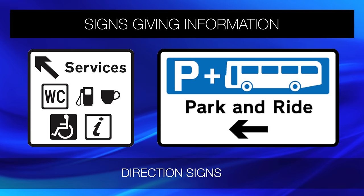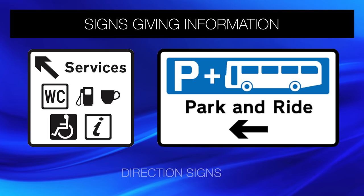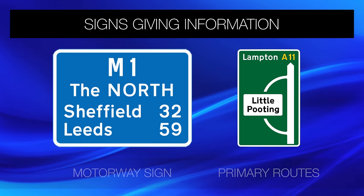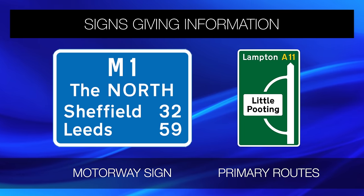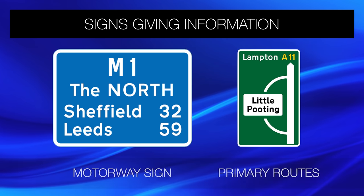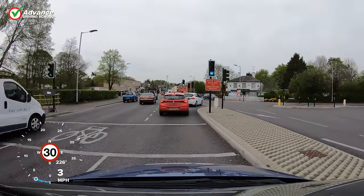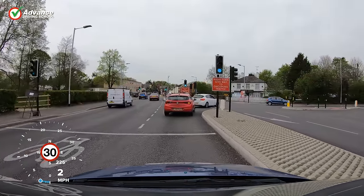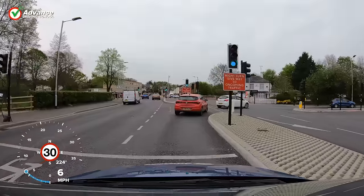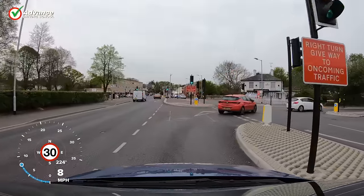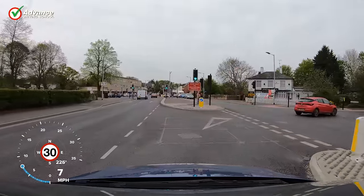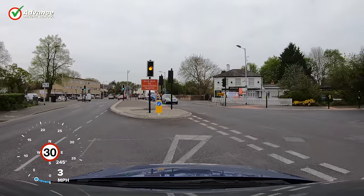Rectangular signs are there to give us directions and other information. The colours of these signs vary with the type of road — for example motorway signs are blue and signs for primary routes are green. Signs for tourists are brown and traffic diversions are yellow. There are hundreds of other signs giving all kinds of different information, and at this junction the red signs remind us that even though our traffic light is green, we must give way to oncoming traffic.